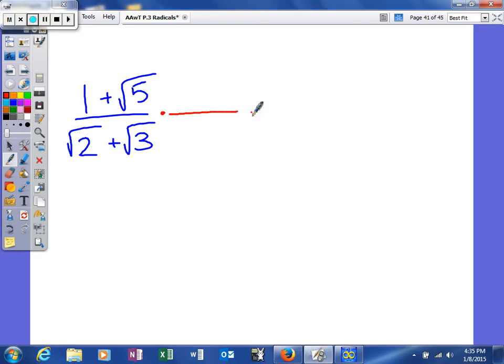So to rationalize our denominator, anytime you have a binomial, you're going to multiply the top and the bottom by the conjugate of the denominator. The denominator is square root of 2 plus the square root of 3, so the conjugate will be the square root of 2 minus the square root of 3.